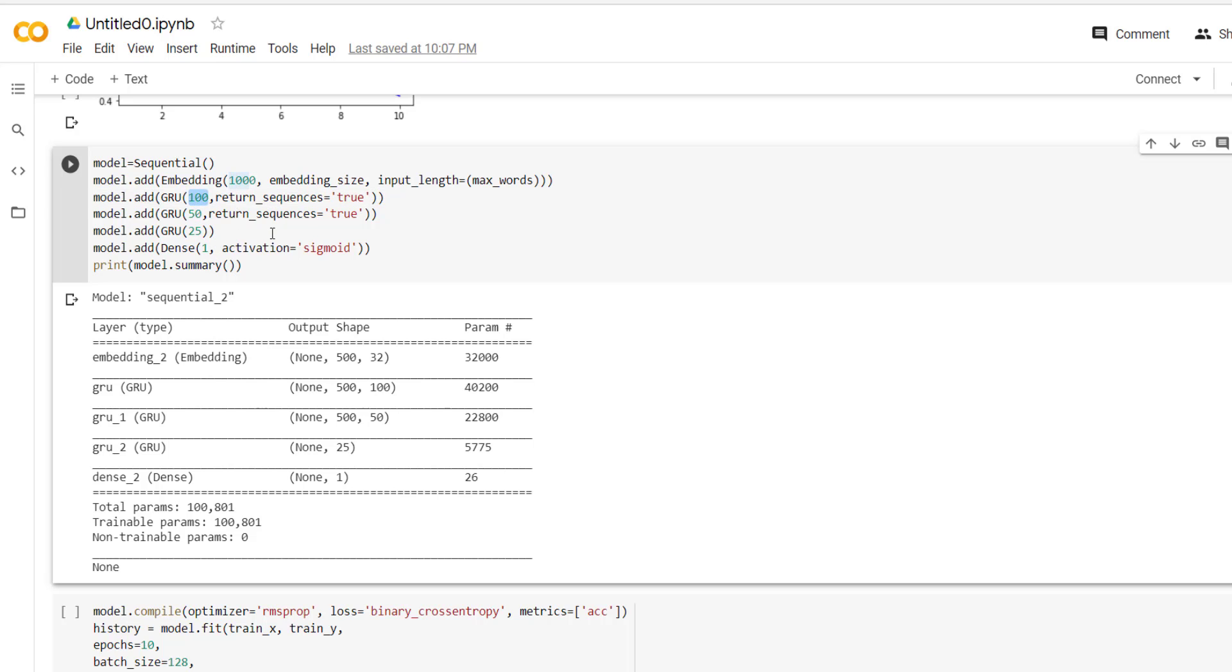Same as that of simple RNN, we have to use return sequence is equal to true in order to distinguish whether we want to work with the only one output or the output generated at each time stamp. So return sequence is equal to true says that we have to provide output of each time stamp to the next set of units.